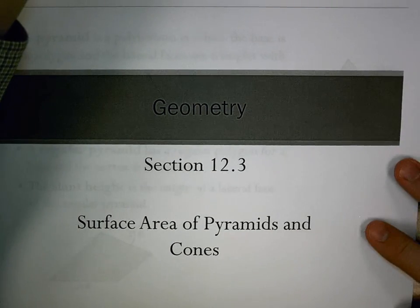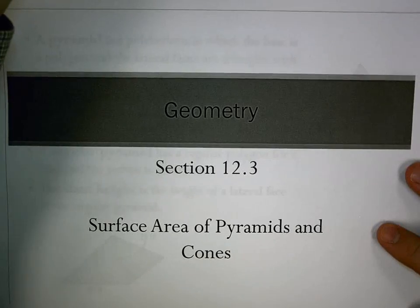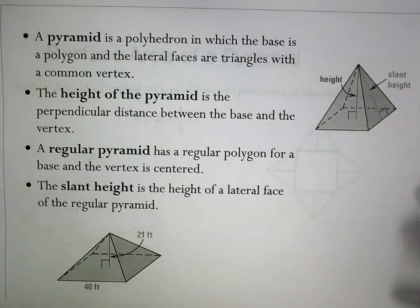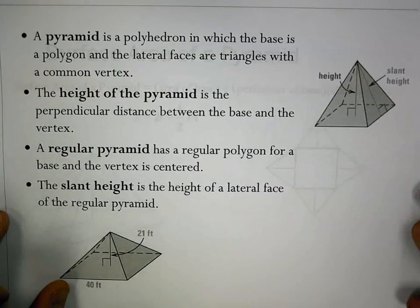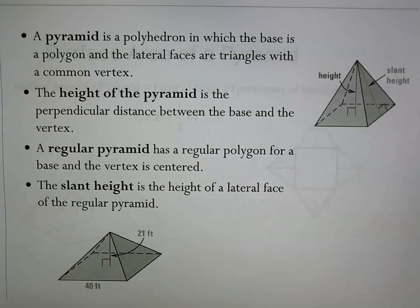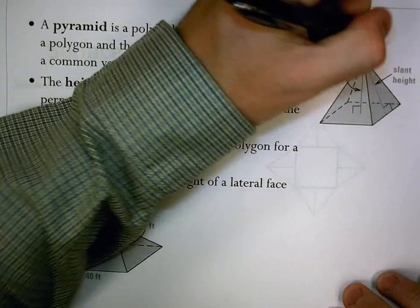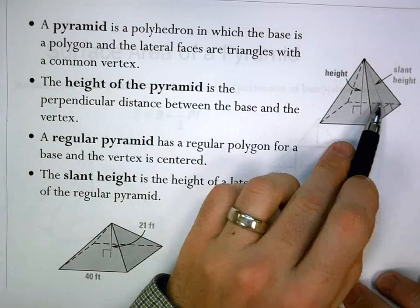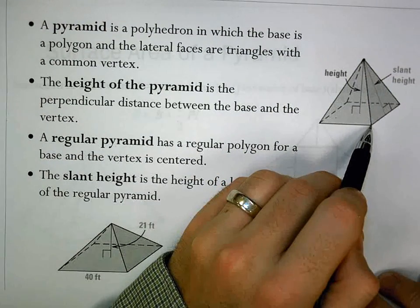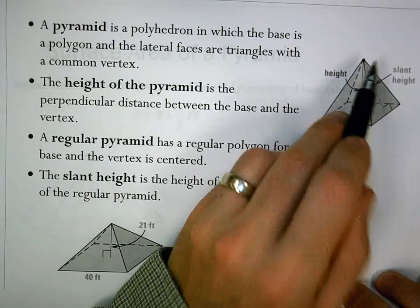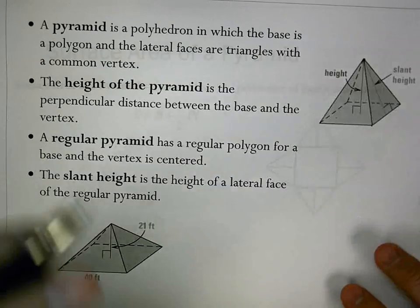Section 12.3 is our second section looking at surface area. In this one we're looking at pyramids and cones. A pyramid is a polyhedron where the base is a polygon and the lateral faces are triangles with a common vertex. The base connects to the vertex at the top, and that's different than a prism.